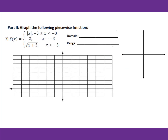Now let's graph some piecewise functions. For number 7, f(x) equals absolute value of x when x is between negative 5 and negative 3. We know the absolute value function graphs like a V-shape. Check the domain — it's between negative 5 and negative 3. Find negative 5 and negative 3 on the graph. We'll be using the portion between negative 3 and negative 5.